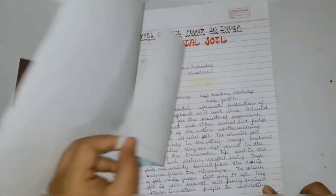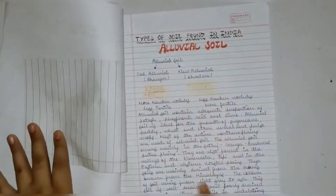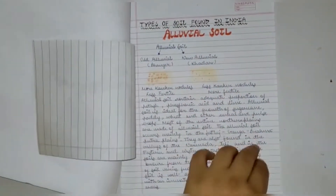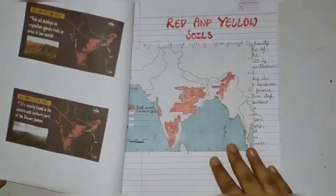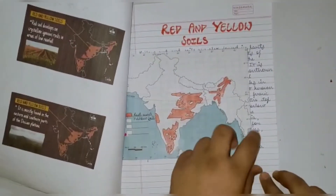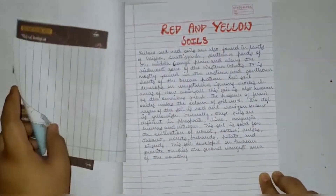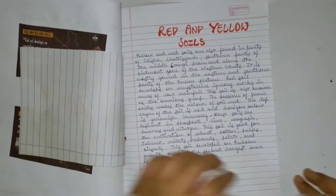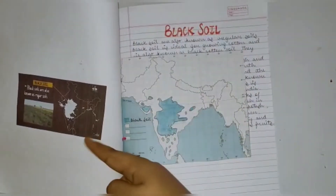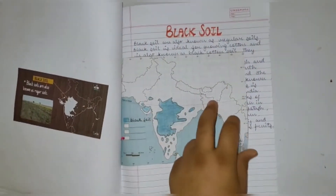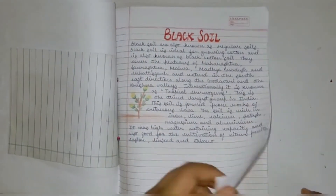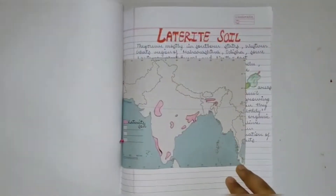Here I have written some information about it and added some cutouts. For red and yellow soil, I have followed the same process — map, information, and some cutouts. Here is black soil as well.